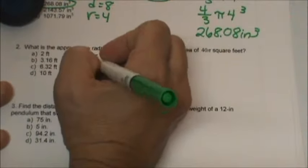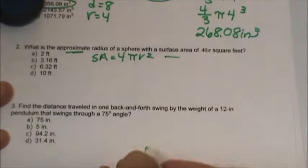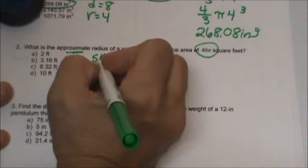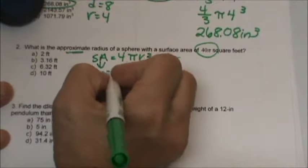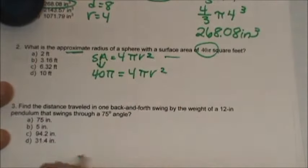Surface area formula is 4 pi r squared. We know the surface area is 40 pi, so for surface area I am going to plug in 40 pi. So let's plug that in and let's start solving.